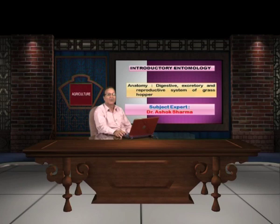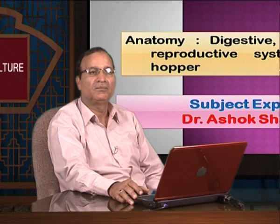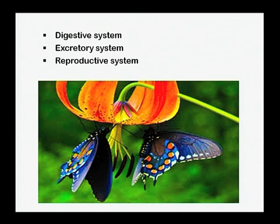Hello viewers. In this unit of the course, we shall discuss the anatomy or the structures found internally. First, we shall see the digestive system, then the excretory system, and then the reproductive system. We will see the details of each system and what are the different parts which make up each system.